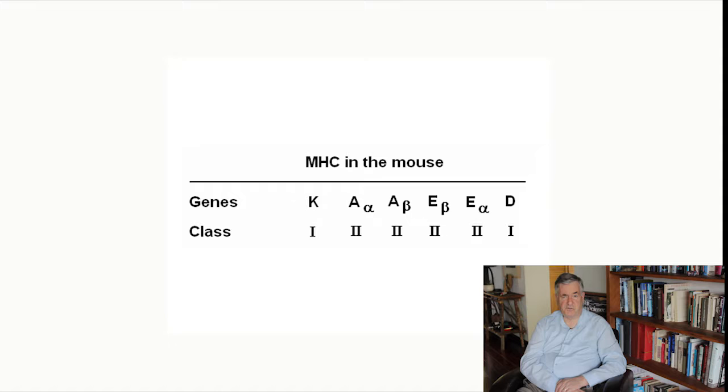The genes and the class of genes for the MHC in the mouse are shown in this slide. There are class 1 genes and class 2 genes. The class 1 genes are K and D, while the class 2 genes are A-alpha and B-alpha. The two A-alpha and B-alpha genes encode one molecule, called the A-type class 2.